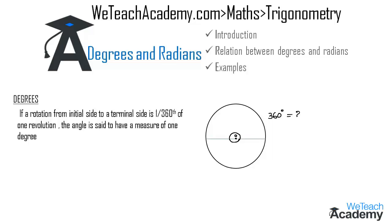The circumference of a circle subtends an angle whose measure is 2π units in radians at the center. Thus we get 360 degrees is equal to 2π radians. By transferring 2 to the right-hand side we get π radians equal to 360 divided by 2, which equals 180 degrees. So π radians = 180 degrees is the relation between radians and degrees.